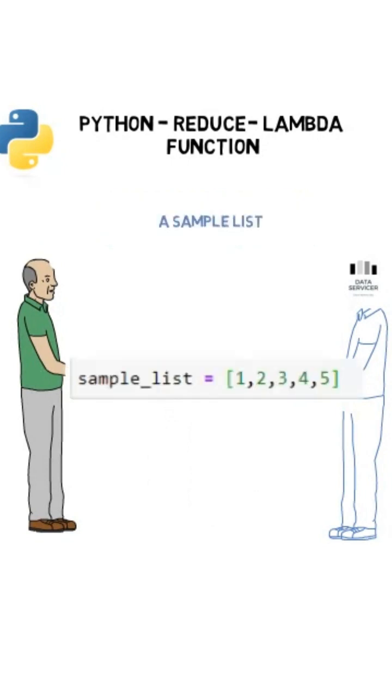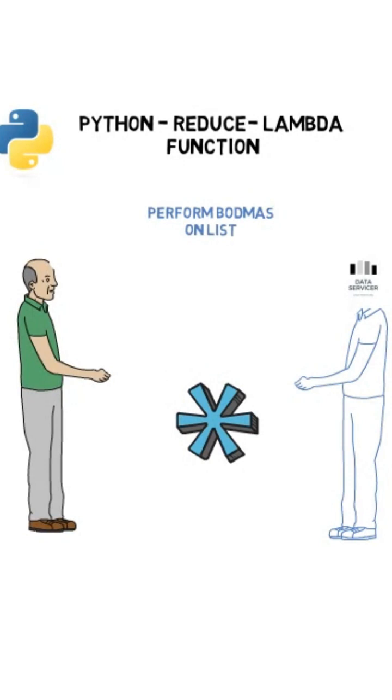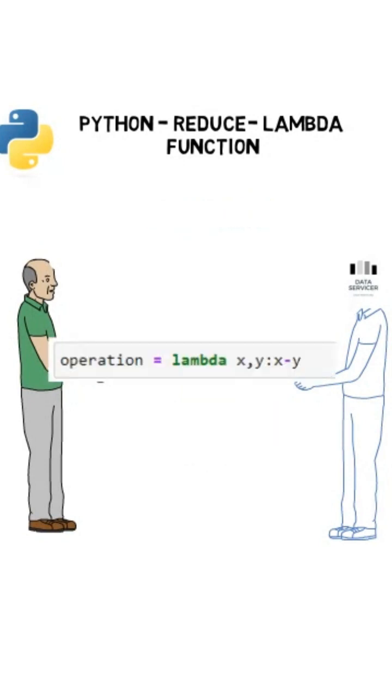We have a list of numbers. If we want to do the sum or multiply all the numbers, or subtract, we can simply define the lambda function to do the operation that we want.